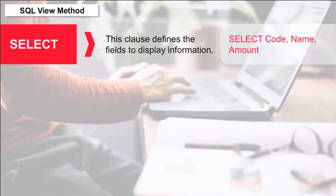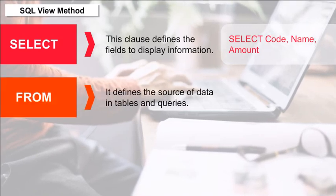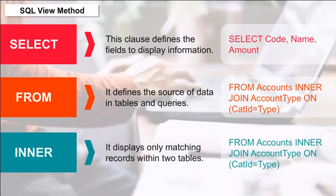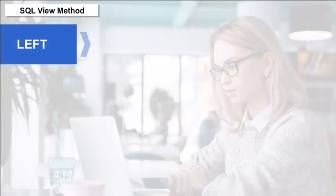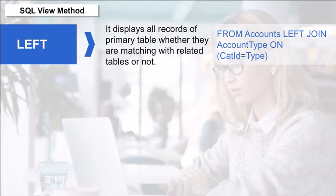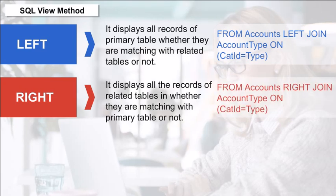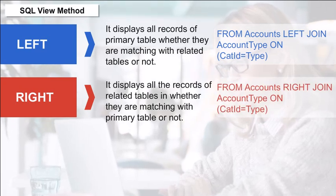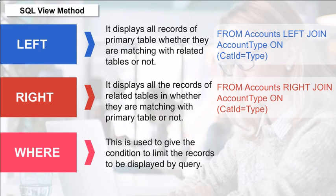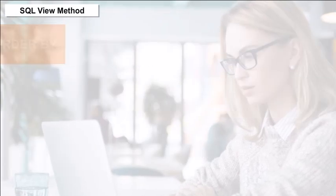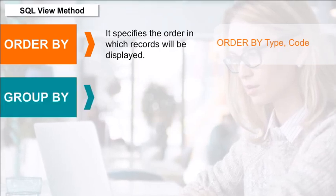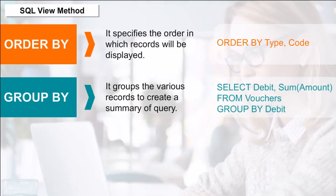SQL View Method: The following statements are used for creating queries through SQL. Select — defines the fields to display. From — defines the source of data in tables and queries. Inner Join — displays only matching records within two tables. Left Join — displays all records of the primary table whether or not they match the related table. Right Join — displays all records of the related table whether or not they match the primary table. Where — gives a condition to limit records. Order By — specifies the order records are displayed. Group By — groups various records to create a summary.